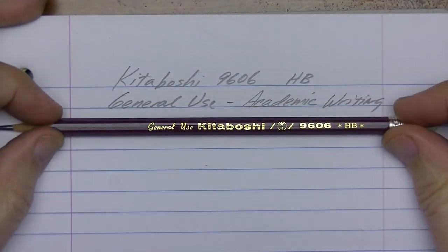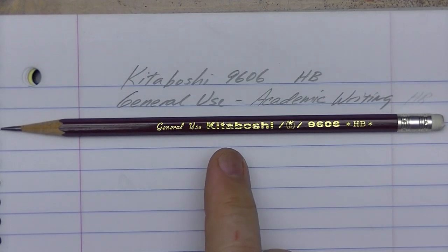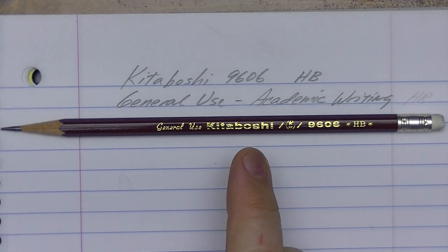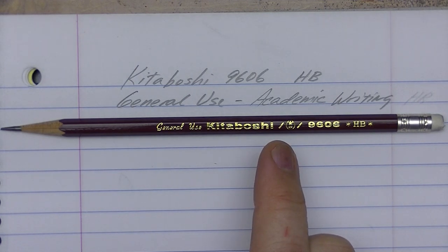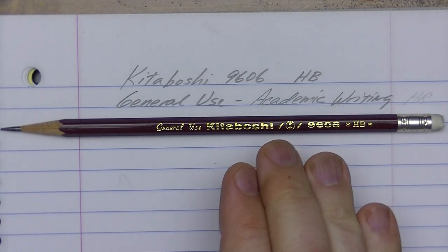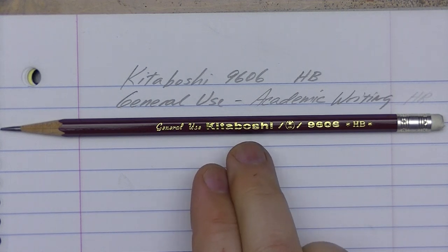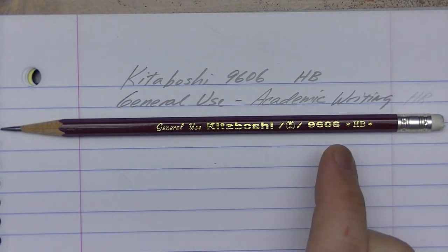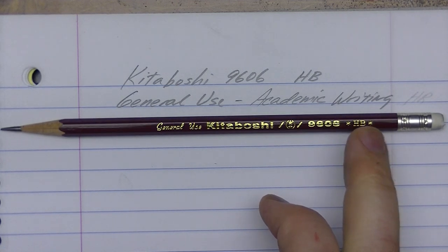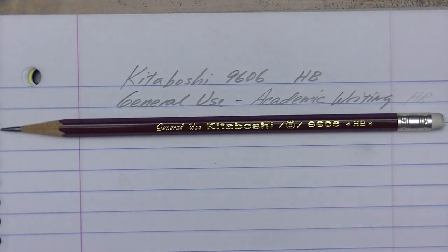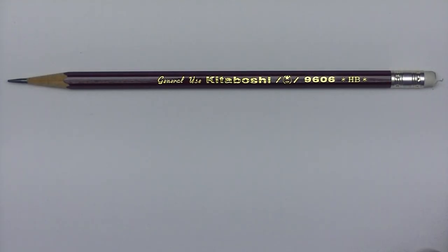Because it's so dark, we're going to take a look and see what it really is equivalent to based on the Mitsubishi Hi-Uni drawing set pencils and see where this would fall. I'm pretty sure it is going to come out much darker than an HB drawing pencil.